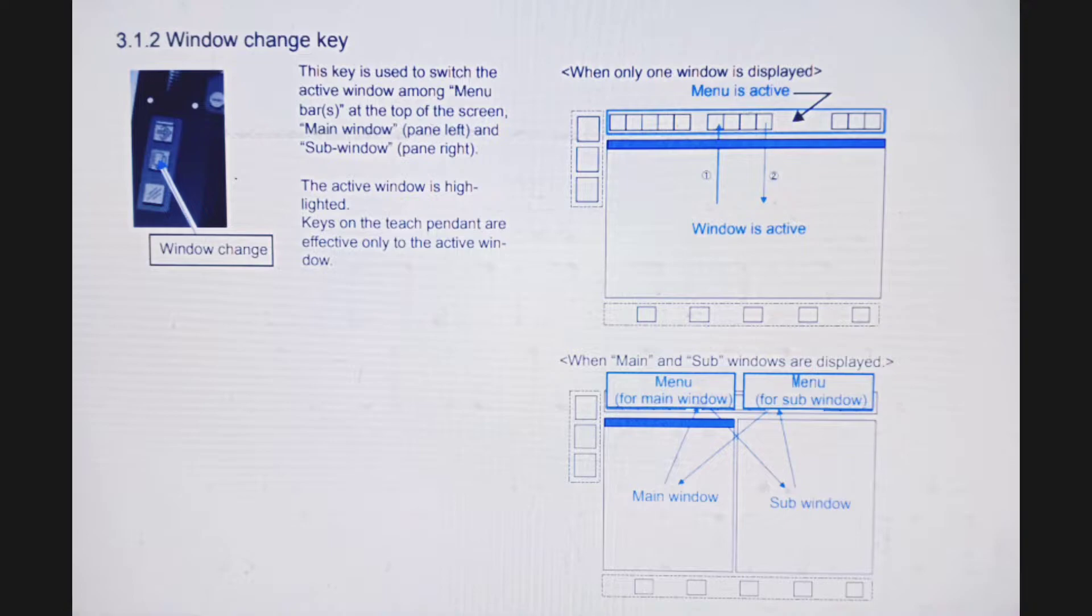The active window is highlighted. Keys on the teach pendant are effective only to the active window. In this image, you can see the window change key and here is the pictorial diagram when only one window is displayed.